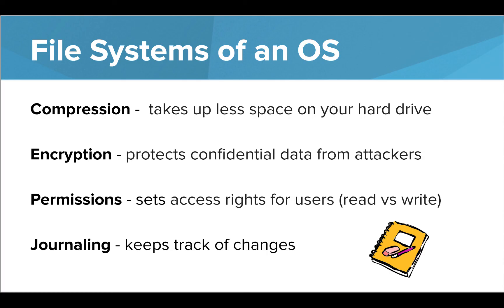Some things to consider are the features of each file system. A few things that file systems can do are compress and encrypt files, set user permissions, and keep track of changes. Compression is important to be able to save and use less memory. Encryption and permissions are important for security. And journaling is important in case you ever need to back up your system or revert to an earlier setup.